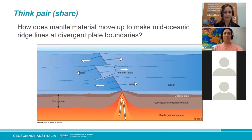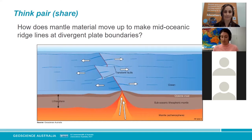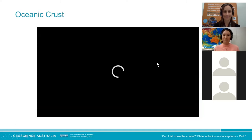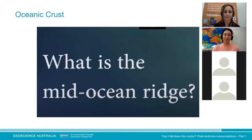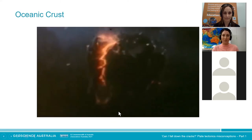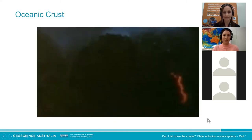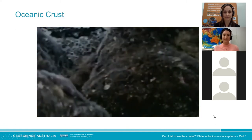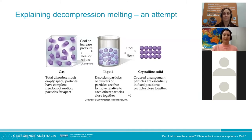Here's a think-pair-share: how does mantle material move up to make mid-Atlantic ocean ridges at a divergent plate boundary? Here's a short video of oceanic crust being formed — footage taken at the ocean floor of new basaltic rock coming out. It looks like it's being pushed out like toothpaste, and it clearly does look fluid as you can see it flowing and moving out, making new oceanic crust at a divergent plate boundary.